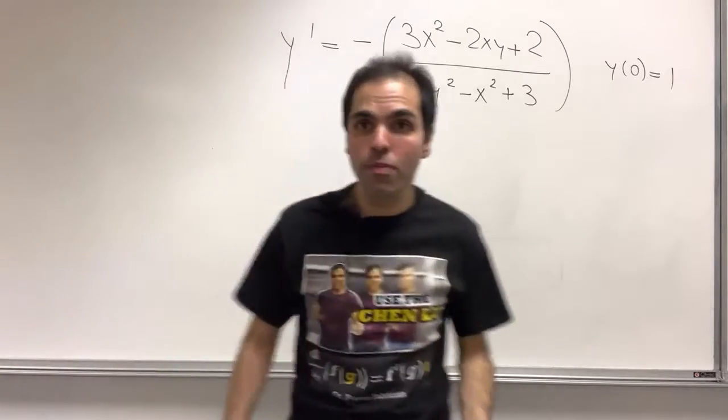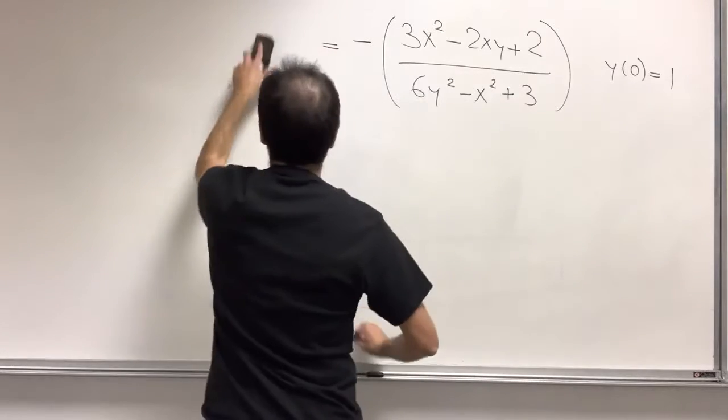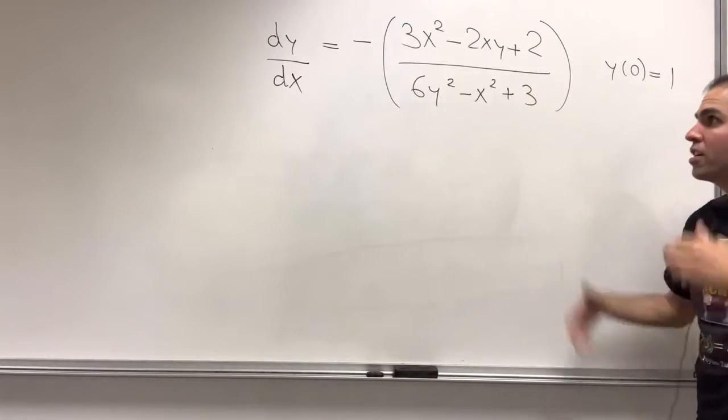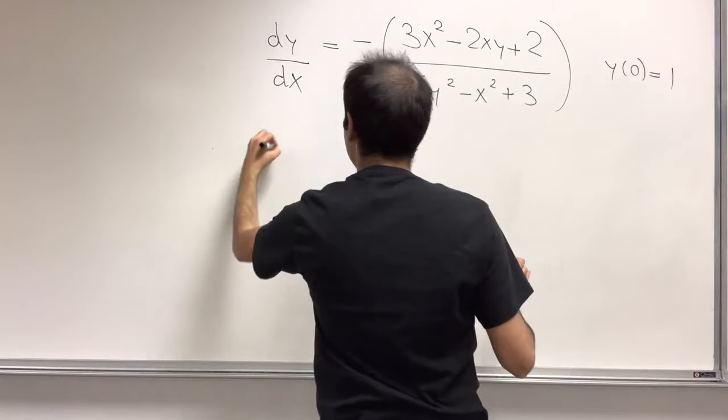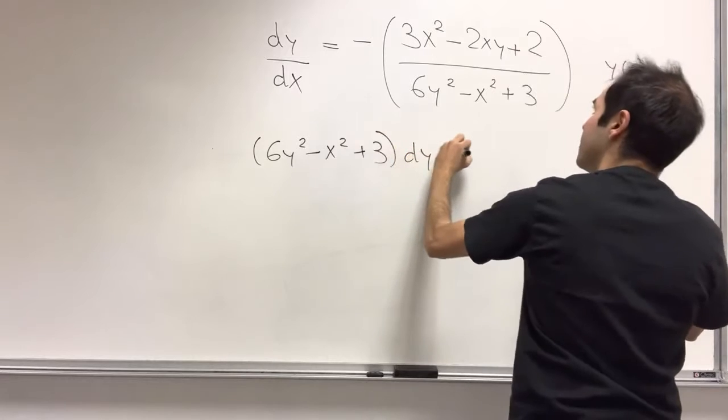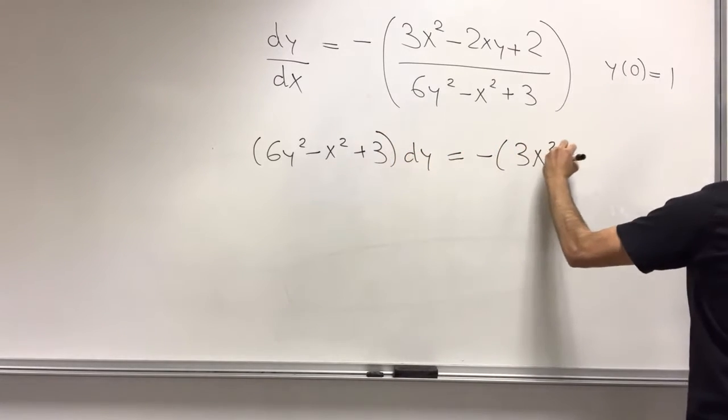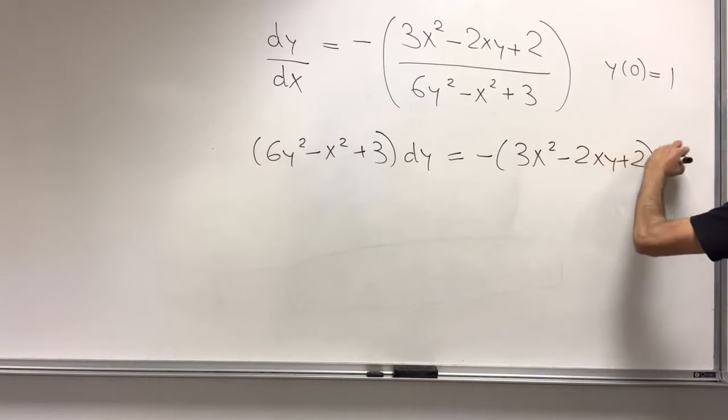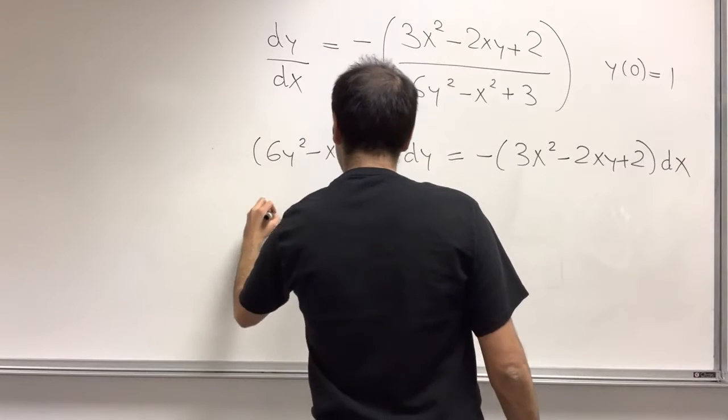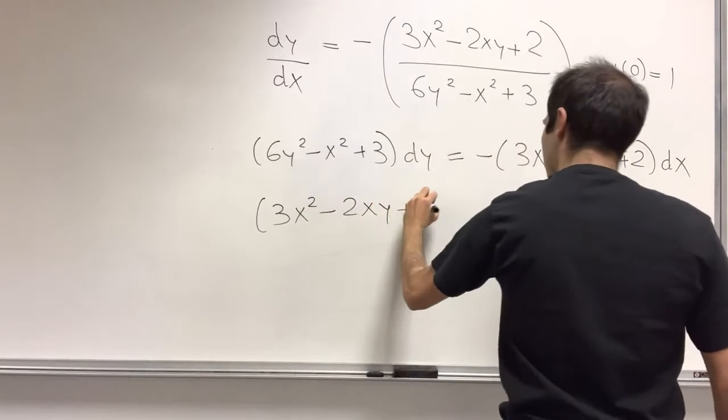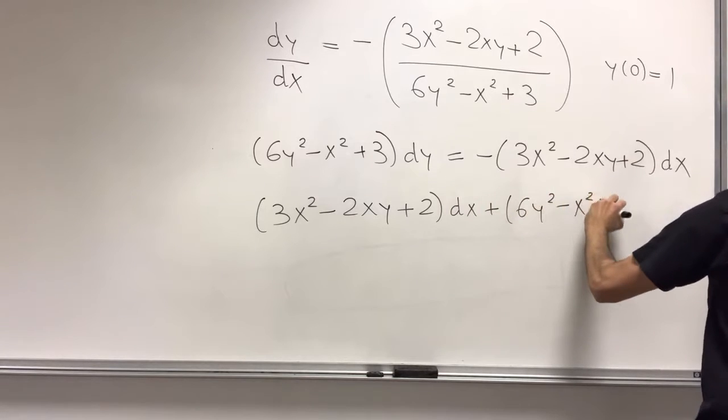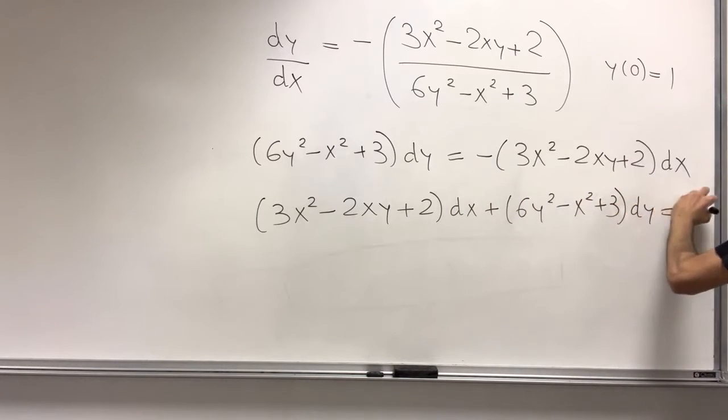So here what we do, first of all, replace y prime by dy over dx, and then cross multiply because we want to put it in a certain form. So we get 6y squared minus x squared plus 3 dy equals minus 3x squared minus 2xy plus 2 dx. And then putting everything on the left-hand side, we get 3x squared minus 2xy plus 2 dx plus 6y squared minus x squared plus 3 dy equals 0.